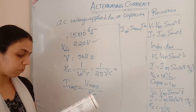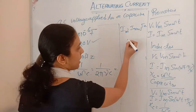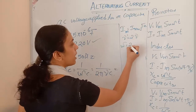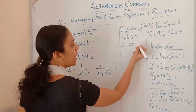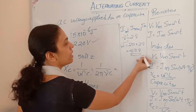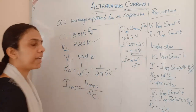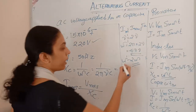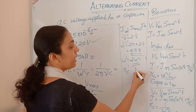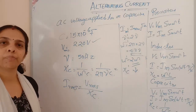If the frequency is doubled, ν' equals 2ν, so ω' equals 4πν equals 2ω. Since Xc equals 1/(ωC), as ω increases, Xc decreases — capacitive reactance will be halved. So doubling the frequency halves the capacitive reactance and increases the current.